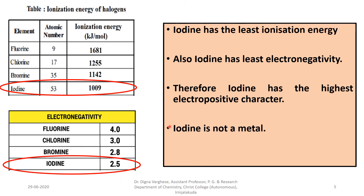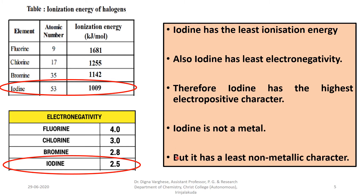Iodine has the highest electropositive character, but iodine is not a metal. Metallic character means the metal has a tendency to lose electrons and form positively charged ions, and metal acts as a conductor. Fluorine, chlorine, bromine, and iodine are all non-metals, but iodine has the least known metallic character among them.